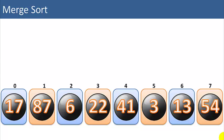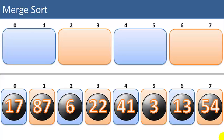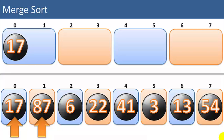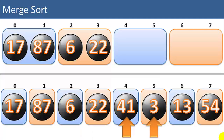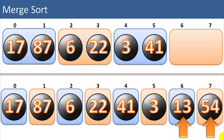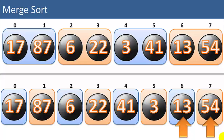That's where the magic comes in for merge sort. We start by setting up four lists with two items each and merge adjacent items. So 17 and 87 — 17 is smaller, so we add that first, then 87. Now we've merged lists 0 and 1. Next, 6 and 22 — 6 is smaller, we add that first, then 22. Then 3 and 41 — 3 is smaller, then 41. And the last two, 13 and 54 — 13 is smaller, then 54. So now we've merged the eight single-item lists into four lists with two items each. That's the first stage of the merge sort.